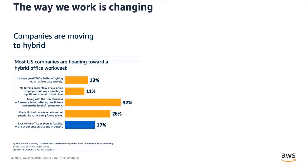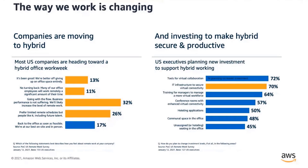83% of U.S. executives say that they are heading to some sort of hybrid working environment, and more than 1 in 10 are looking to give up their office space entirely. This next visual shows that executives really mean it too. 72% are increasing their investment in tools for virtual collaboration, and 70% are increasing their investment in IT infrastructure to secure virtual connectivity. This focus on securing IT infrastructure is what I would like to talk about today.